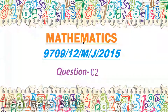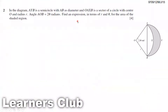Mathematics 9709, May 2015, Paper 12, Question 2. In the diagram, AYB is a semicircle with AB as a diameter, and OAXB is a sector of a circle with center O and radius R.